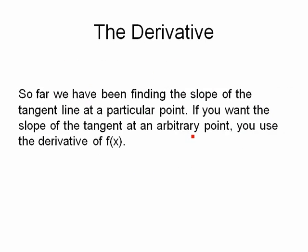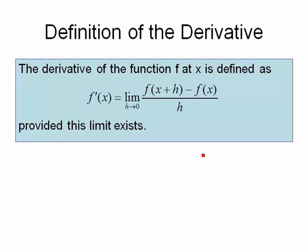So far we've been finding the slope of the tangent line at a particular point, but what you might want is the slope of the tangent line at an arbitrary point, just some point x. To do that, you use something called the derivative of f. The derivative of the function f at x is defined as the limit as h approaches 0 of f of x plus h minus f of x over h.